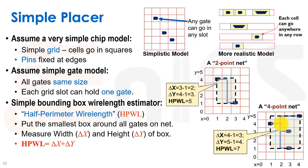In this case, we get four - we get on the y-axis five minus one, and on the x-axis we get four minus one - and altogether a half perimeter wire length of seven.